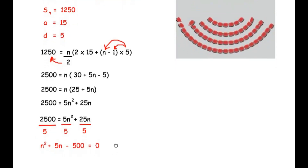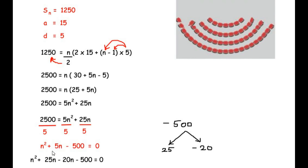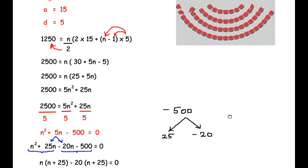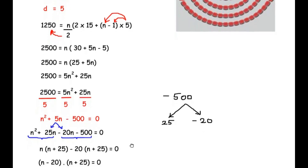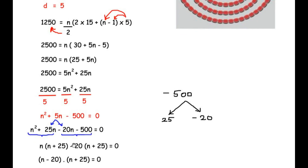We factorize n² + 5n − 500 = 0. We need two factors of −500 that add to +5. The factors are +25 and −20, since 25 × (−20) = −500 and 25 + (−20) = +5. Rewriting: n² + 25n − 20n − 500 = 0. Grouping: n(n + 25) − 20(n + 25) = 0. Taking (n + 25) as common: (n + 25)(n − 20) = 0.